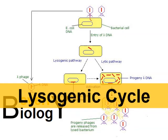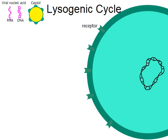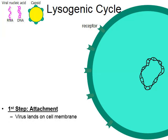In this video we're going to discuss viral replication following the lysogenic cycle. When we get into the steps of the lysogenic cycle we can break it down into five stages. The first one is the attachment stage, and like the name implies, the virus will land on the cell membrane of the host.